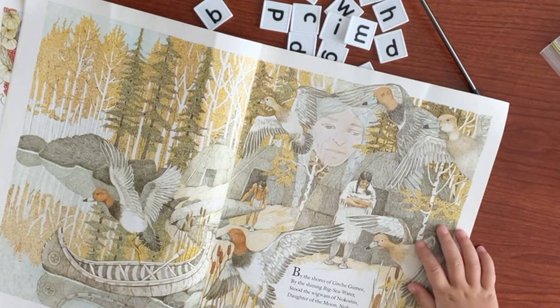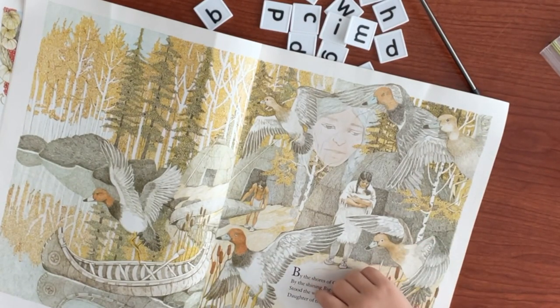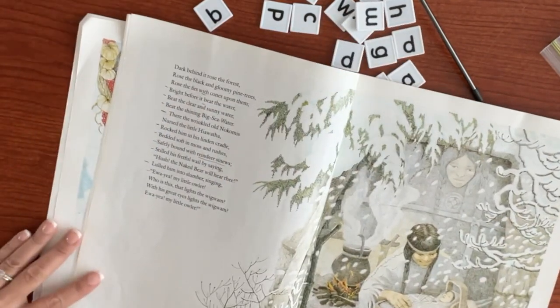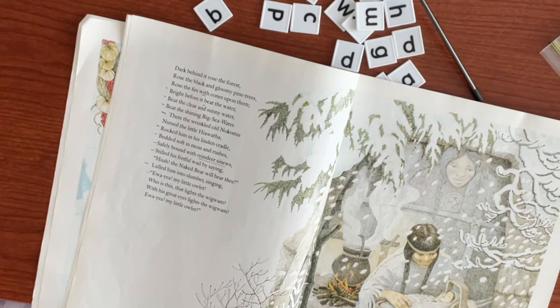By the shores of Gitche Gumee, by the shining Big-Sea-Water, stood the wigwam of Nokomis, daughter of the moon Nokomis. Dark behind it rose the forest, rose the black and gloomy pine trees, rose the firs with cones upon them.